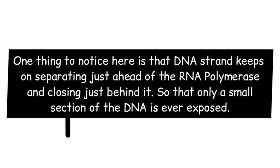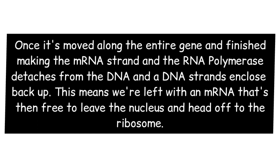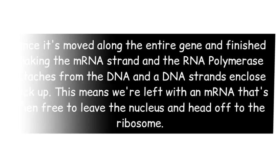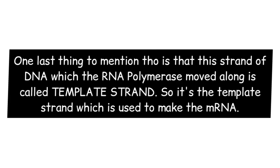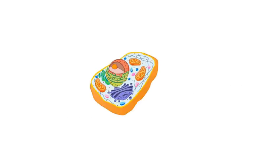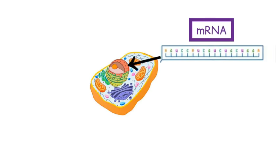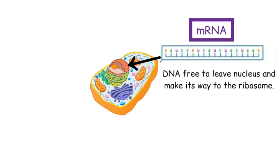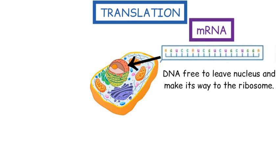One thing to notice is that the DNA strand keeps separating just ahead of the RNA polymerase and closing just behind it, so that only a small section of the DNA is ever exposed. Once it moves along the entire gene and finishes making the mRNA strand, the RNA polymerase detaches from the DNA and the DNA strands close back up. This means we're left with an mRNA that's then free to leave the nucleus and head off to the ribosome. It's also worth mentioning that the strand of DNA which the RNA polymerase moved along is called the template strand — so it's the template strand which is used to make the mRNA.